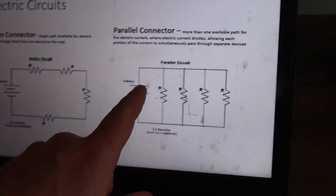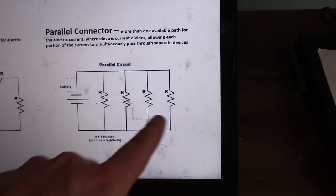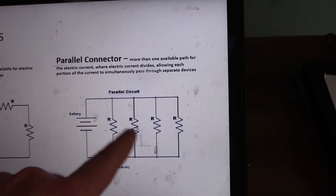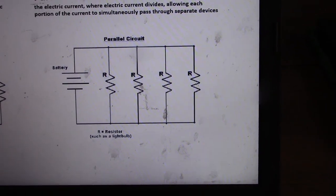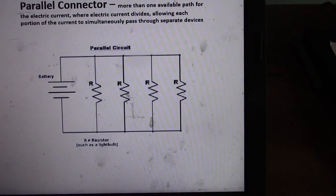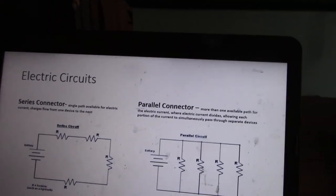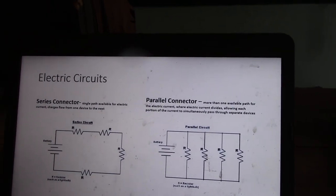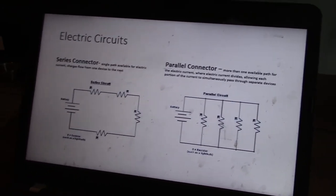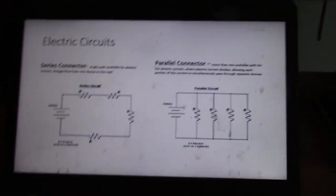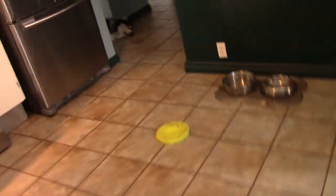A parallel connection has more than one available path for electric current. If you block flow to one resistor, electrons can move to other pathways — so not all bulbs go out. Our homes are connected in a combination of series and parallel: the power coming to our house is connected in series, but all appliances are connected in parallel so we can turn them on and off individually using switches.